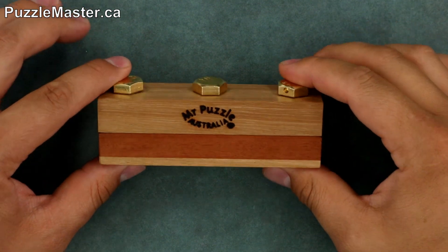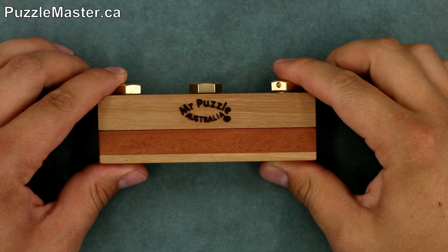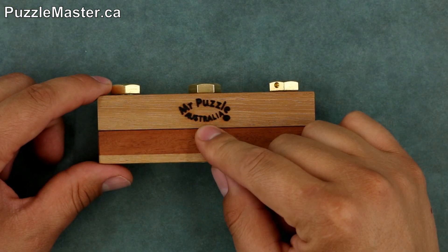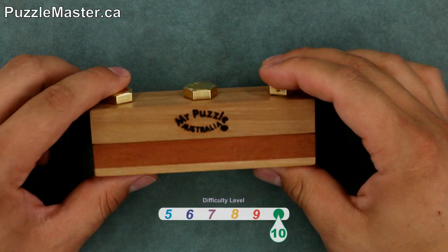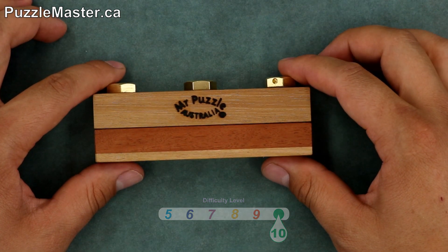So here is one of the brand new puzzles we got in at Puzzle Master. It's called Three Wise Bolts and it's from Mr. Puzzle in Australia. It's a level 10 on the Puzzle Master difficulty rating scale which runs from 5 to 10.